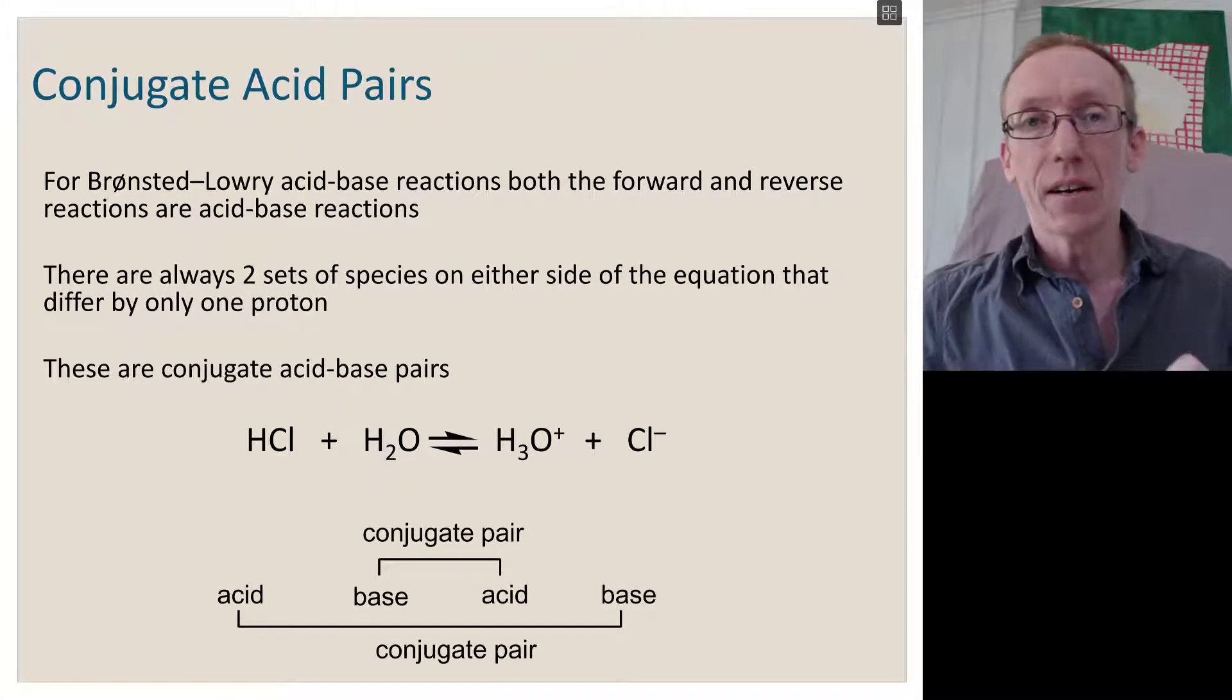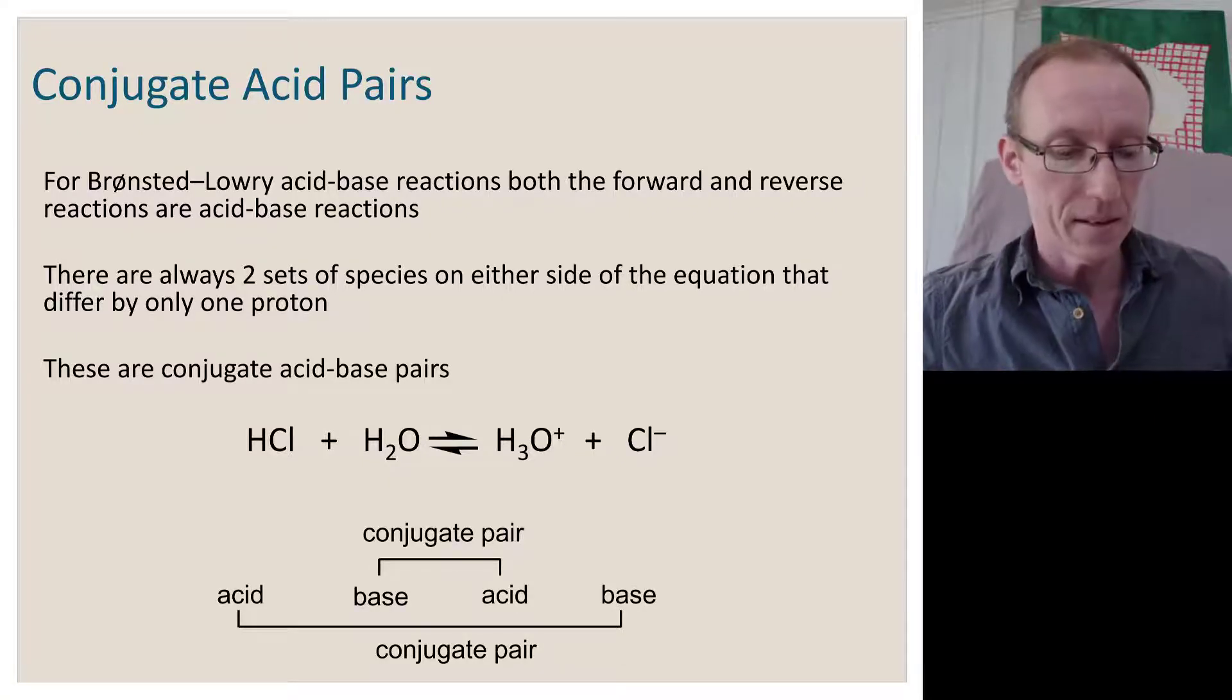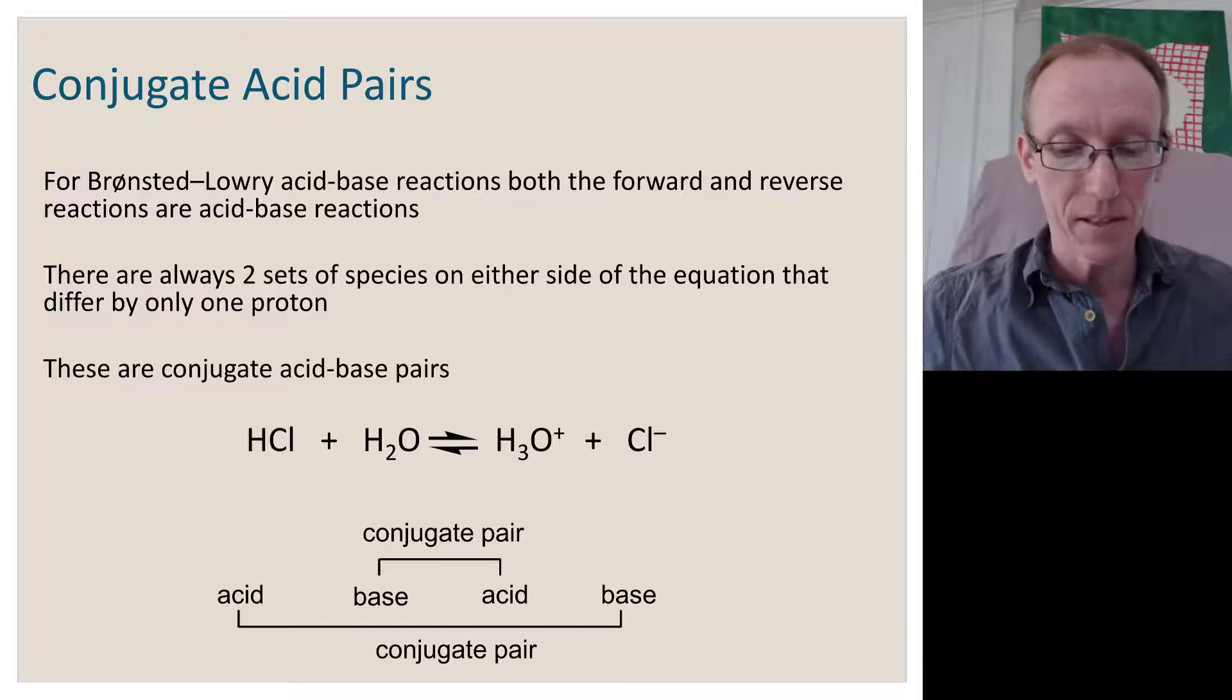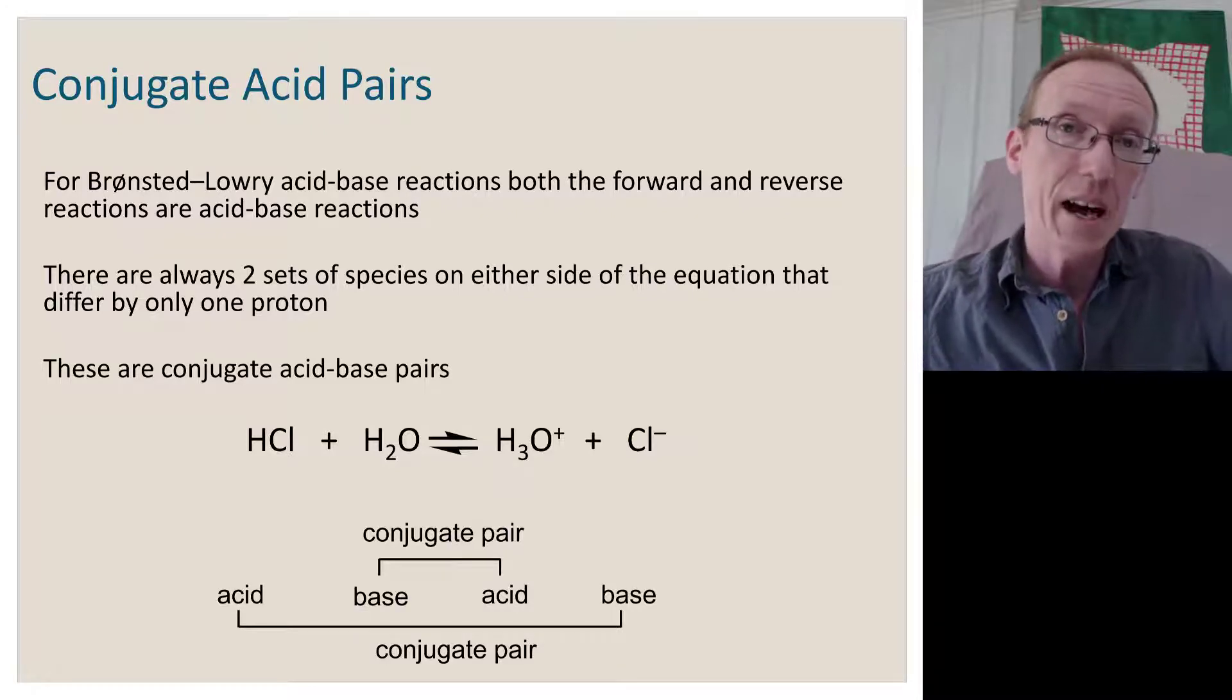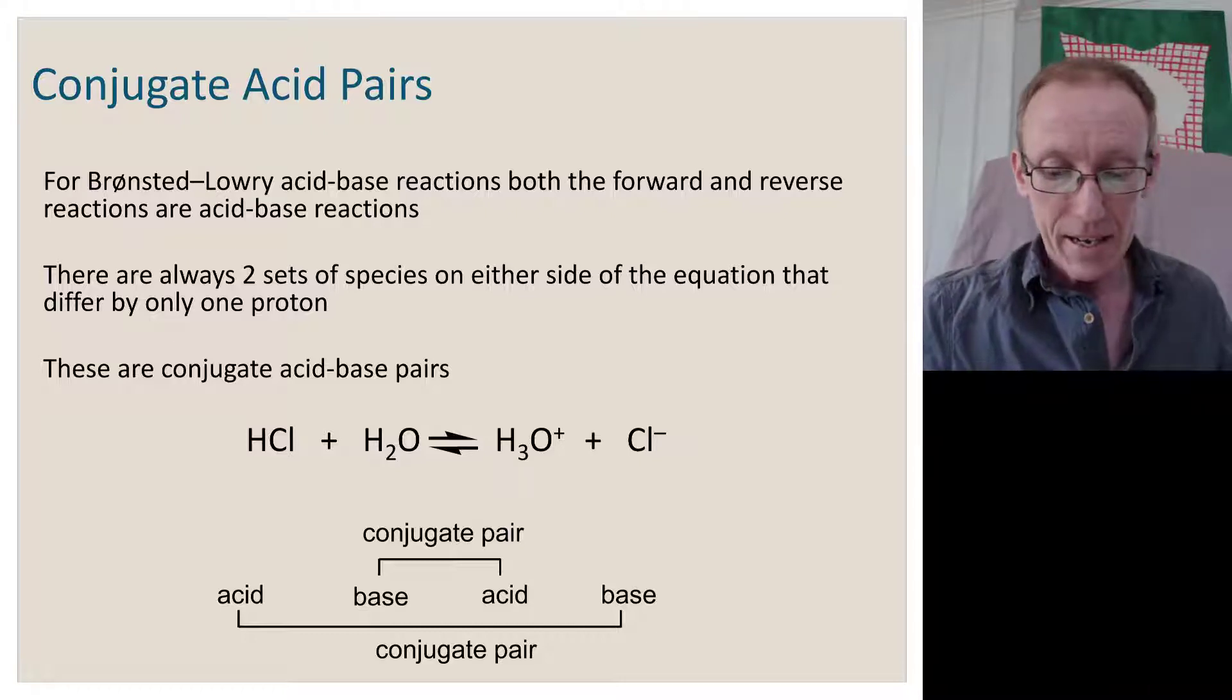Important in the realm of acids and bases is the idea of conjugate acid pairs. For Bronsted-Lowry acid-base reactions, the forward and the reverse reactions are acid-base reactions. There's always two sets of species in this situation. Either side of the equation differ by only a proton.